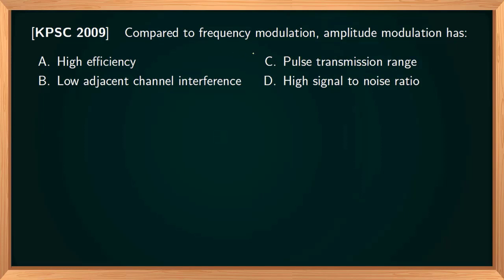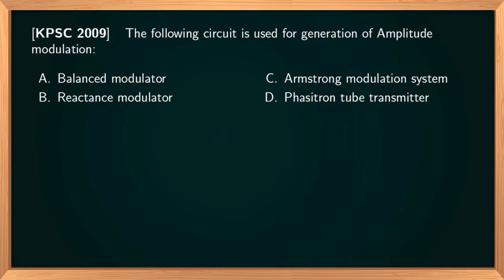Compared to frequency modulation, what is the advantage of amplitude modulation? We know there are several advantages of FM over AM. However, AM employs a lower frequency spectrum; therefore, an amplitude-modulated signal can be transmitted over a wider range. So the AM system has a higher transmission range than FM.